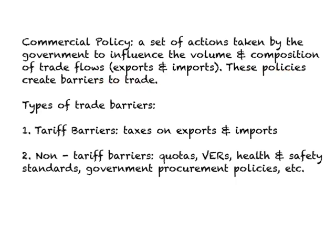There are two types of trade barriers. One is called the tariff barrier, which is essentially a tax on exports or imports. As far as the U.S. goes, the U.S. Constitution says that the government cannot put a tax on exports — the only place it can impose taxes in foreign trade is on imports.